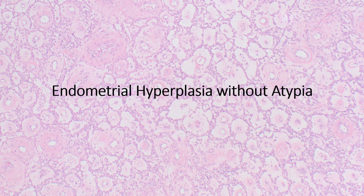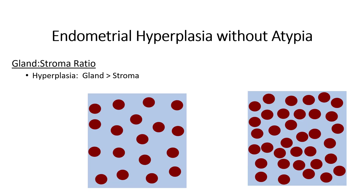Endometrial hyperplasia without atypia is defined as a proliferation of endometrial glands such that the area of glands is greater than the area of endometrial stroma in a given area. In my rudimentary diagrams, blue represents endometrial stroma and red circles represent endometrial glands. If the red outnumbers the blue, you have endometrial hyperplasia. The exact ratio varies by source — some say gland-to-stroma ratio greater than 3:1. Check with attendings at your institution, as the threshold varies slightly by personal preference.